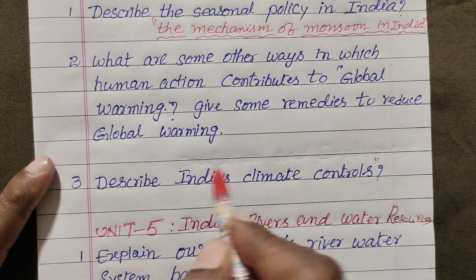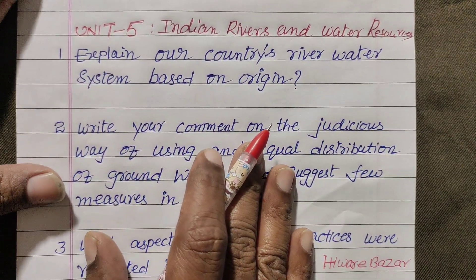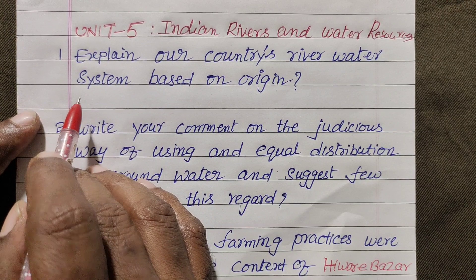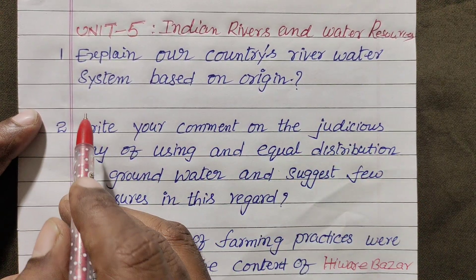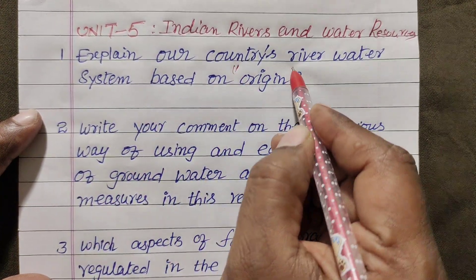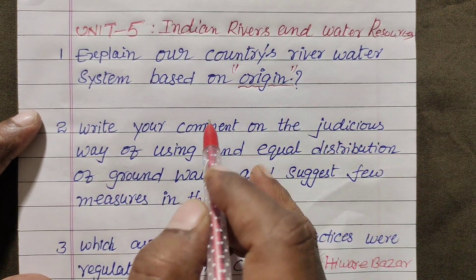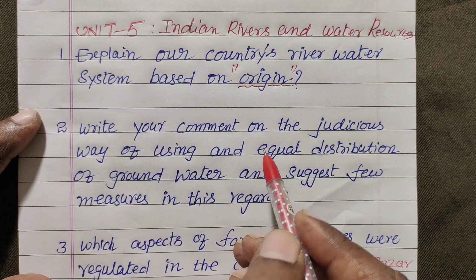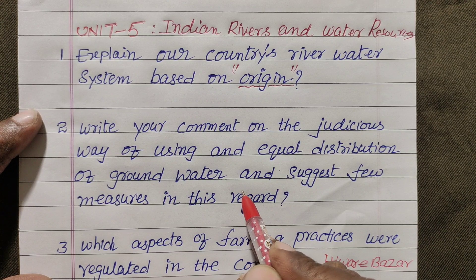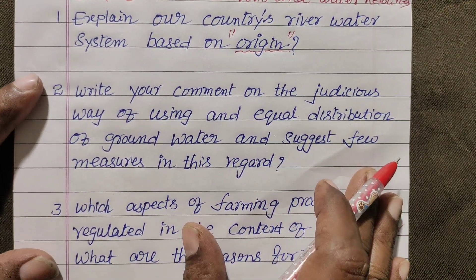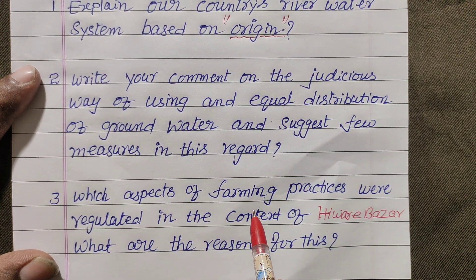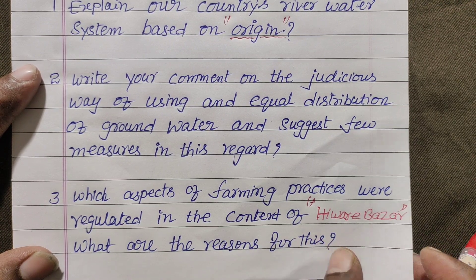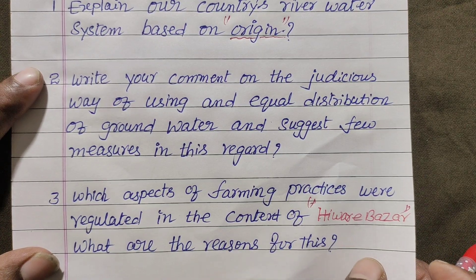Describe India's climate controls. Unit 5: Indian Rivers and Water Resources. Explain our country's river water system based on origin — we have two river systems: North India (Himalayan rivers) and South India (Deccan rivers). Second question: write your comment on the judicious use and equal distribution of groundwater, and suggest a few measures. Third question: which aspects of farming practices were regulated in the context of Hivare Bajar? This appears frequently in public and other examinations. This is a 4-mark question.